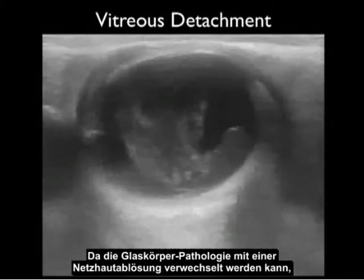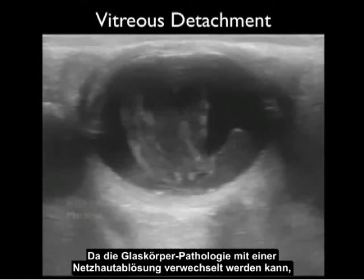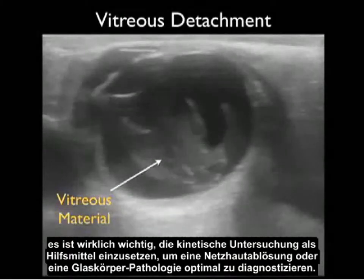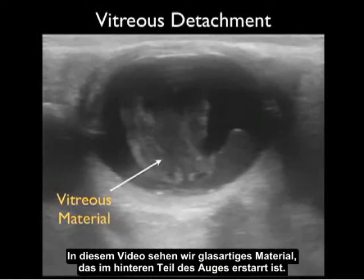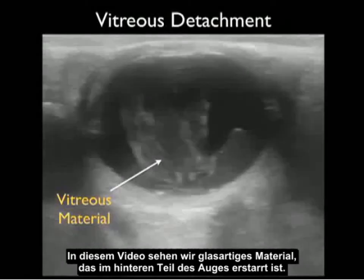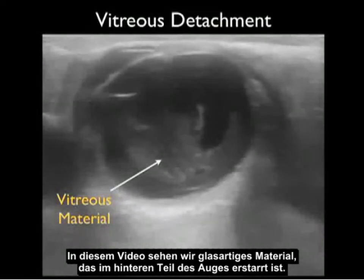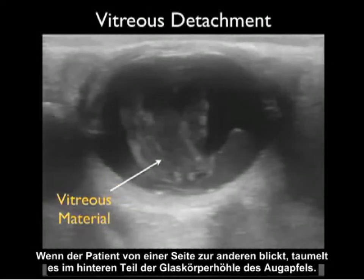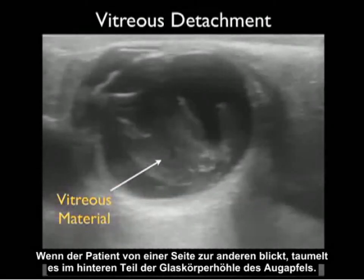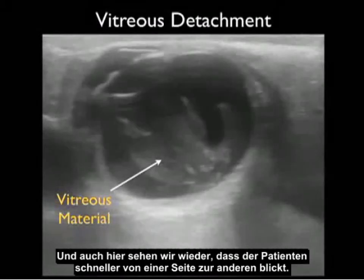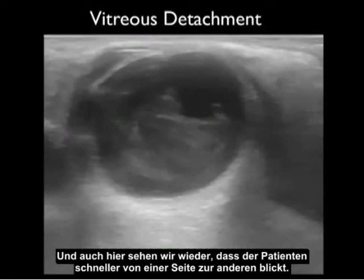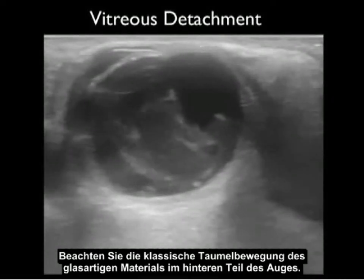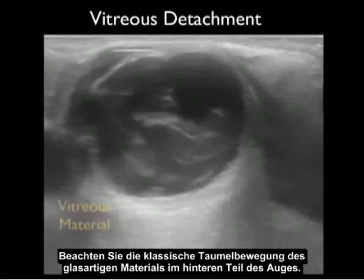Because vitreous pathology can be confused with retinal detachment, it's crucial to employ the kinetic examination to best diagnose retinal detachment versus vitreous pathology. In this clip we see vitreous material congealed within the back of the eye, and notice as the patient looks from side to side it tumbles around within the posterior vitreous cavity of the eyeball. Here again the patient looks from side to side more rapidly, and notice the classic tumbling motion of the vitreous material within the back of the eye.